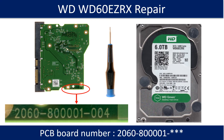Hello there. In this video we are going to talk about WD desktop hard drive PCB board repair and disk data recovery. The PCB board number is 2060-800001.